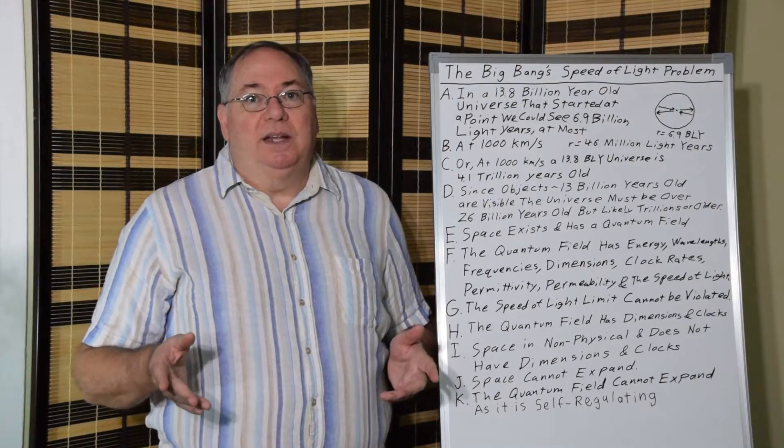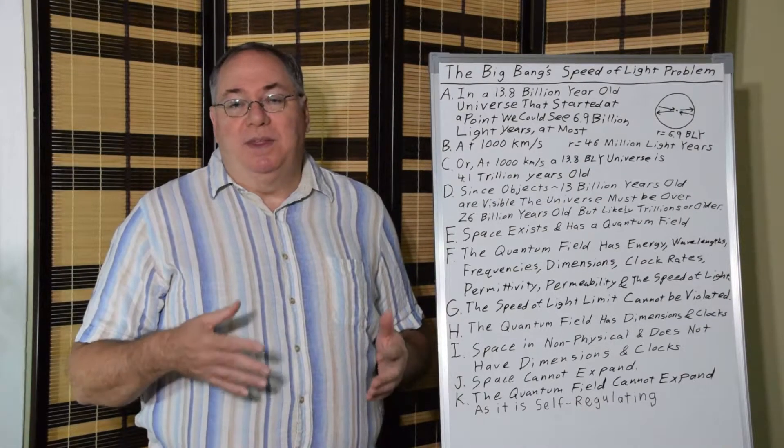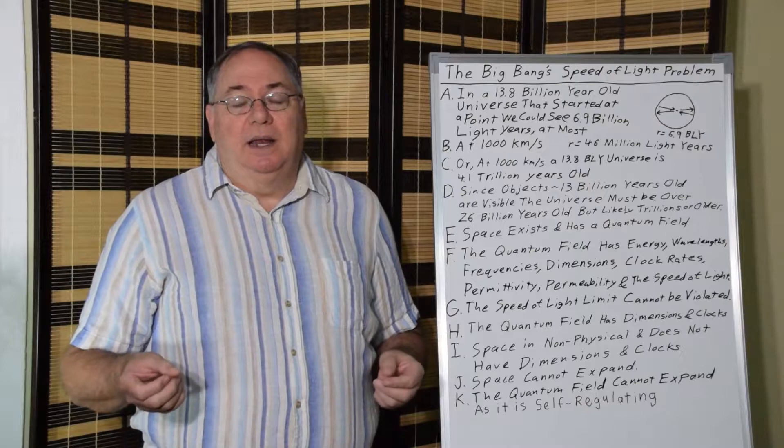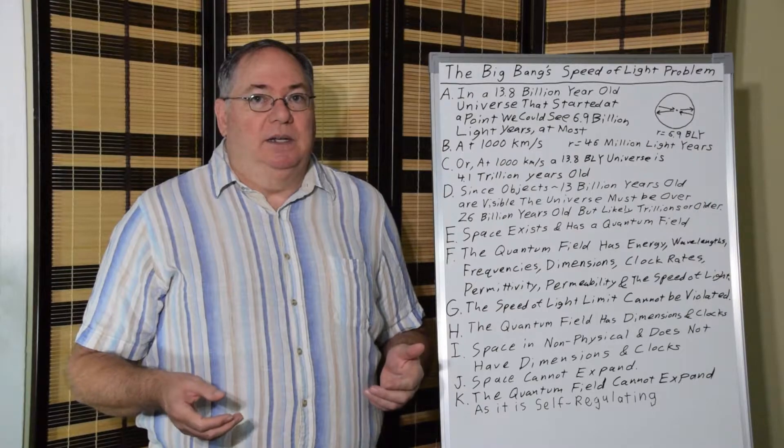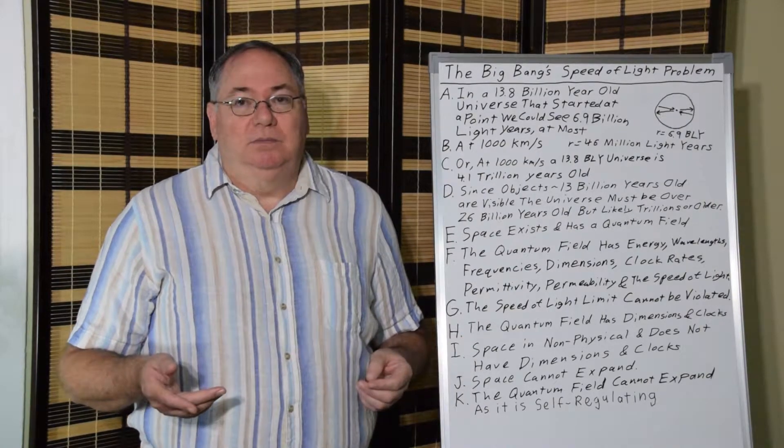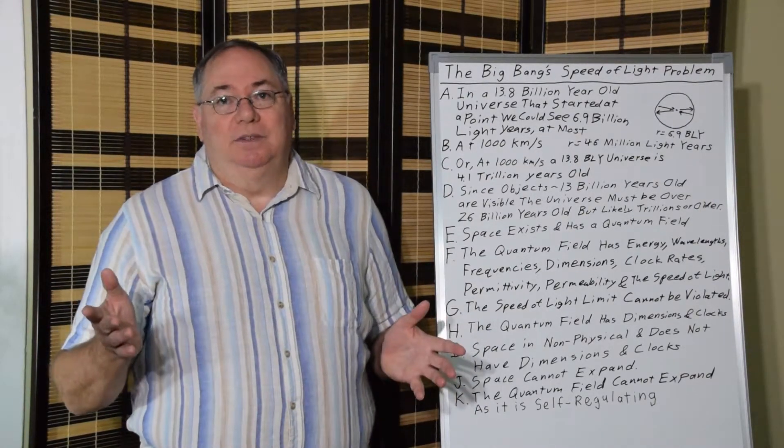So, likely we couldn't see anything even nearly as far as 6.9 billion light years. So, the fact that we can see something that we think is beyond 6.9 billion light years based on the Hubble scale, tells us that the Big Bang theory is wrong. Just right there, it's wrong.